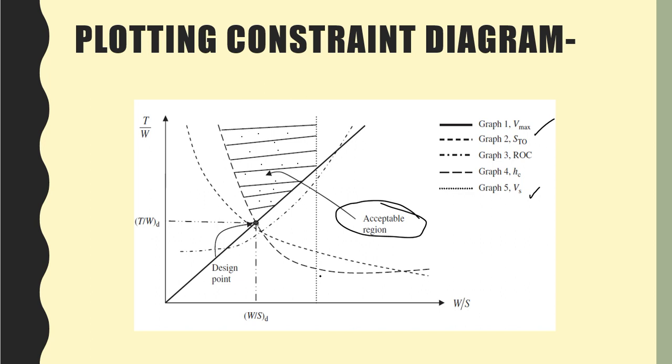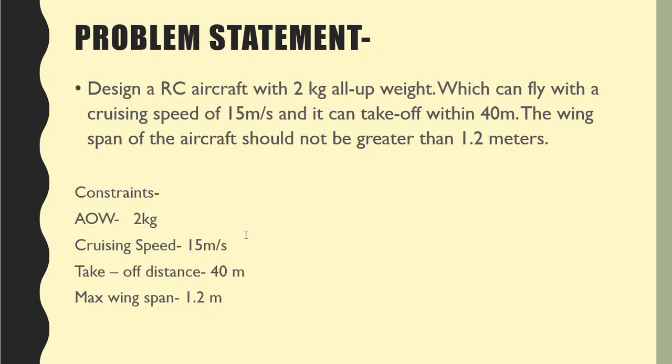Now let's move on to a problem statement and draw a constraint diagram for it. This is our problem statement: we are going to design an aircraft which has an all-up weight of 2 kg, it can fly with a cruising speed of 15 meters per second, and it can take off within 40 meters.